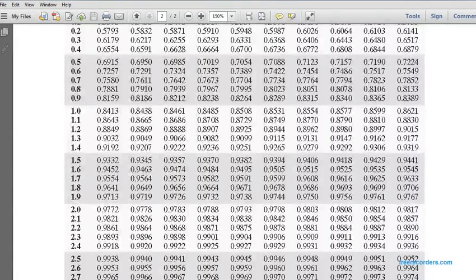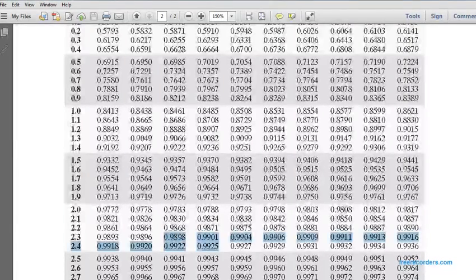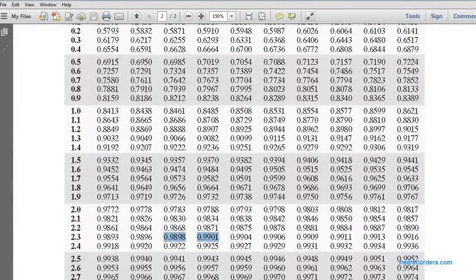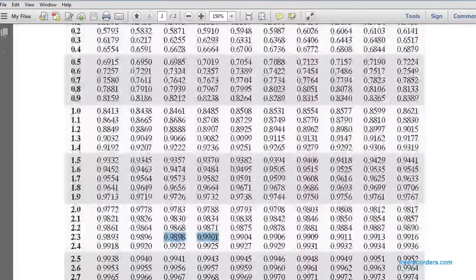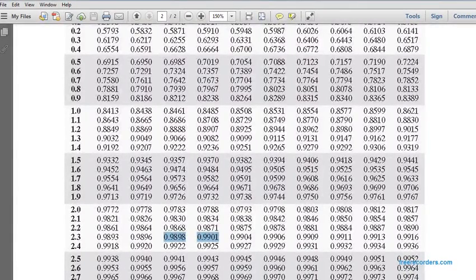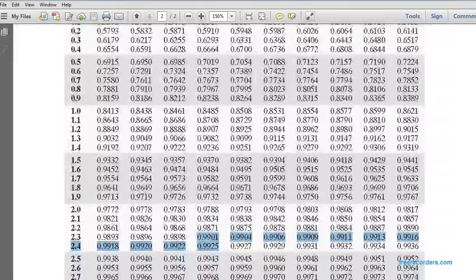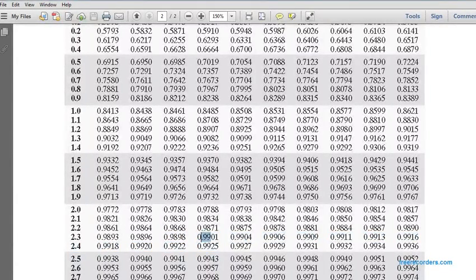0.9900 is between these two numbers, 0.9898 and 0.9901. It's two away from the one on the left. It's one away from the one on the right, so we picked the closer one. We're going to use the 0.9901.